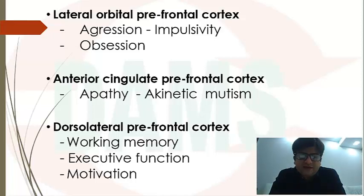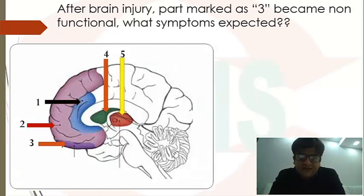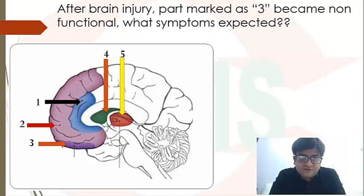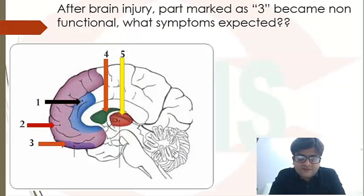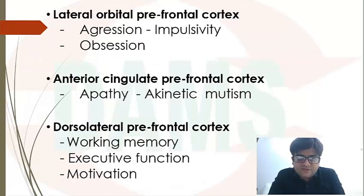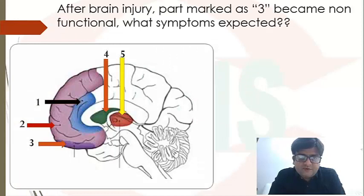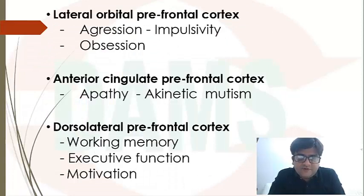This is the most important slide of this discussion. Suppose I frame a visual question: a patient had a brain injury and part number three is damaged. You need to know the names of the parts. Part one is the cingulate; part two is the frontal cortex; and part three, the most proximal part, is orbitofrontal cortex. So if they point at three and ask for symptoms, your answer should be aggression, impulsivity, and obsession. If part one — anterior cingulate cortex — is involved, your answer would be apathy and akinetic mutism.